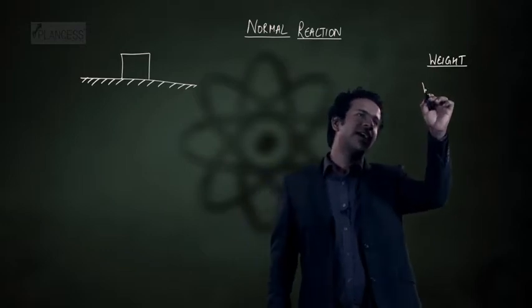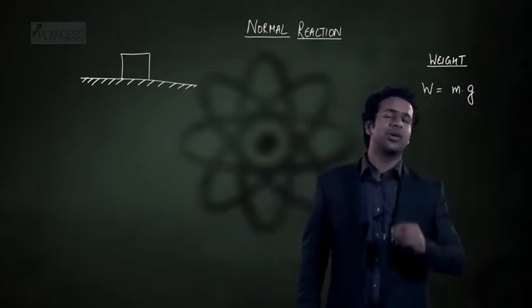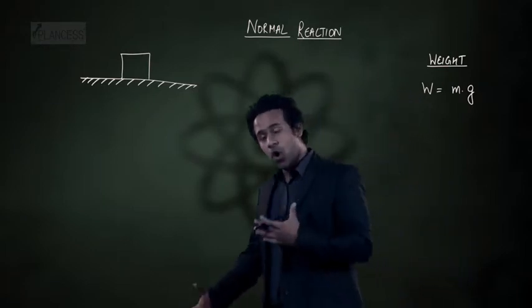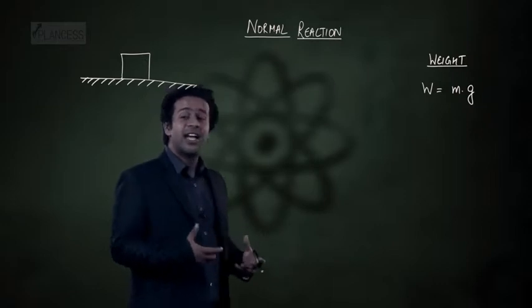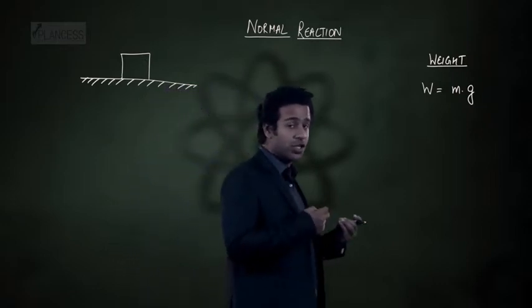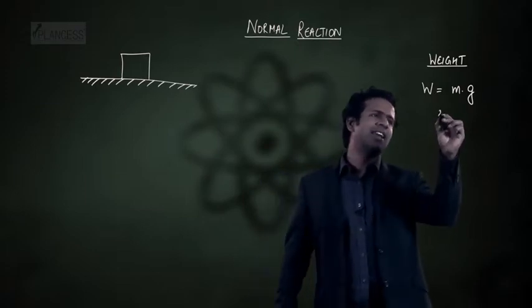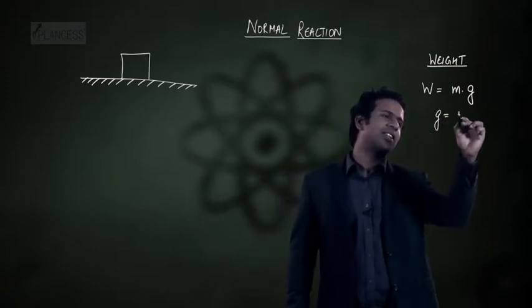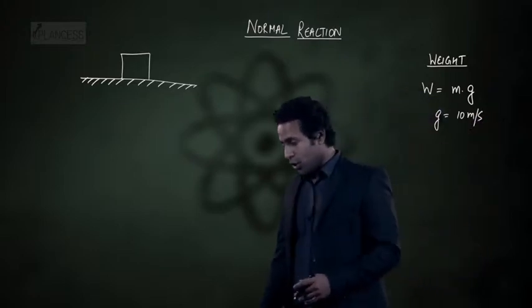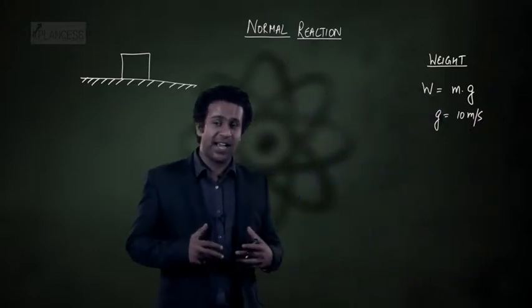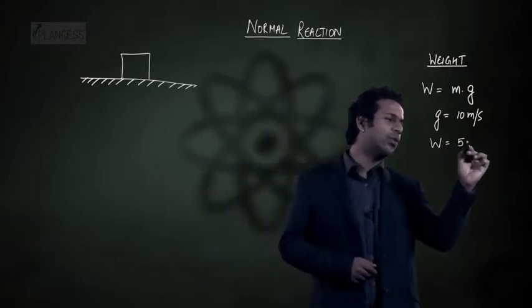Weight of any object is equal to mass times the acceleration due to gravity. We have already discussed acceleration due to gravity as the acceleration that everybody has close to the surface of Earth, and its value is close to 10 meters per second squared. So if there is a body which has mass 5 kg, its weight would be equal to 50 Newtons.